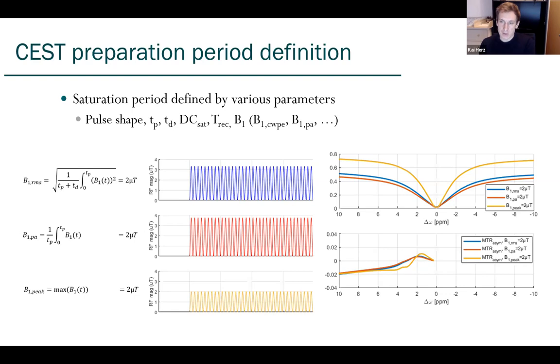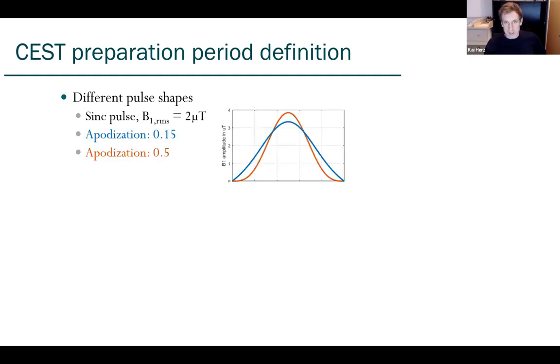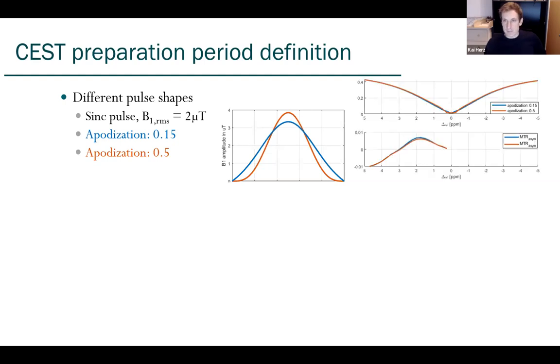So it's really important to define clearly what you actually used. While it might sound obvious that you have to define your B1 correctly, there are also other parameters where you might not even know what the difference is. For instance, let's take the pulse shape. B1 root mean square two microtesla, and I just change the apodization of this shaped pulse a little bit. When you now look at the definition, unfortunately the CEST spectrum again looks different. This is actually something you will probably not find in the paper. In the worst case, you don't even know about it because the shape is somewhere hidden in the vendor library.